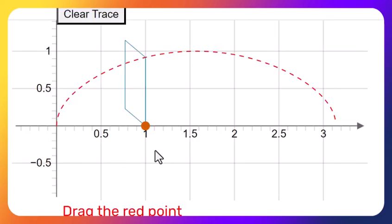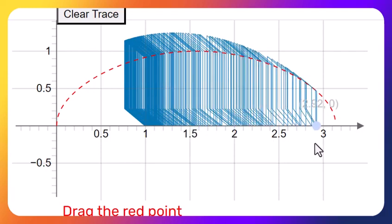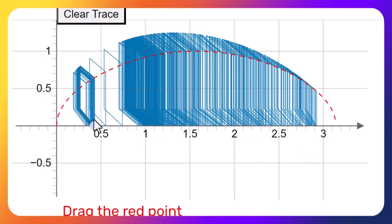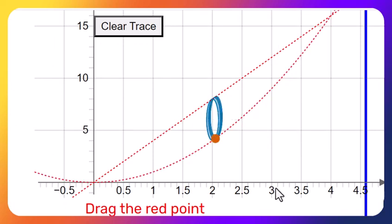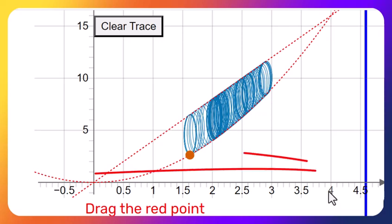For example, if the cross-section is a square formed by a point on the graph of a function, sliding and collecting all such cross-sections produces a three-dimensional object. Similarly, if the cross-section is a circle, collecting all such circles forms a solid, and integrating the circle areas as base area from, say, 0 to 4 gives the volume of the solid.